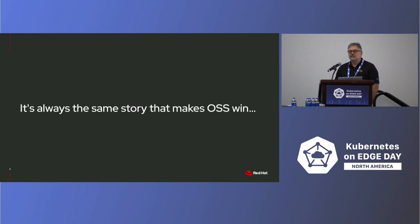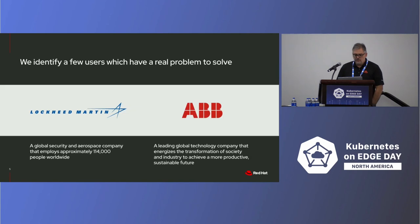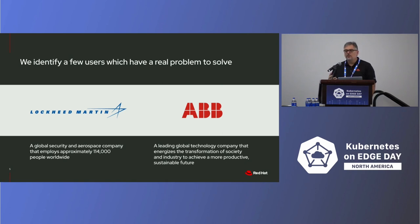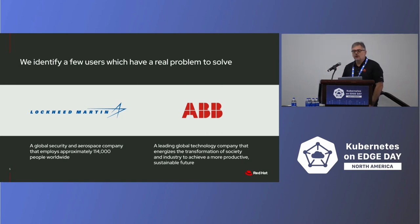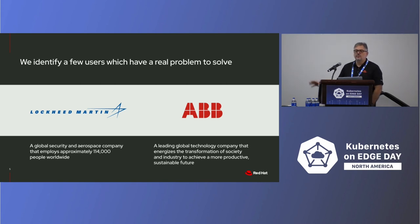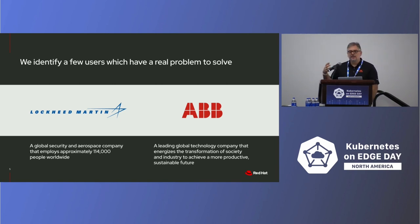One thing I've observed is that it always happens the same way. We first identify a few users that have a real problem to solve — people that want to go onto the market with something. Here I'm taking the example of two customers that we have been working with: Lockheed Martin and ABB. These two large companies were the people that made us decide that we should be working on the small form factor Kubernetes.